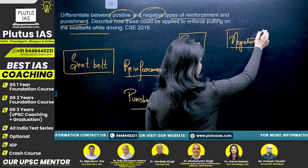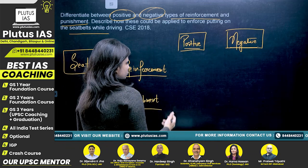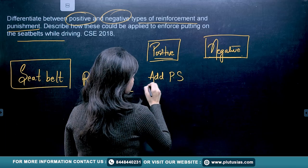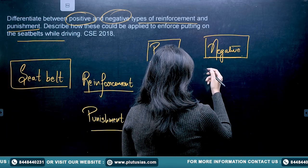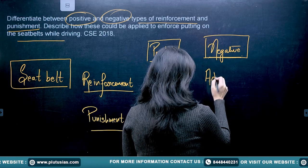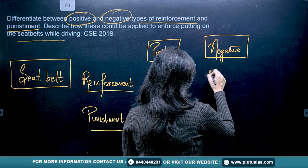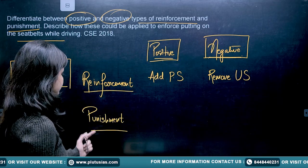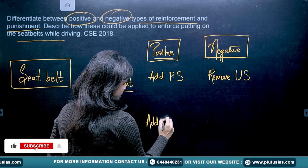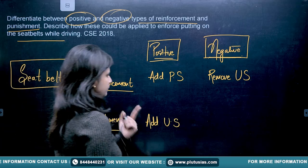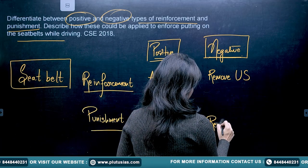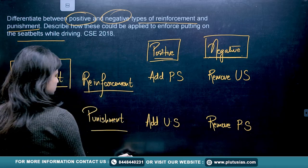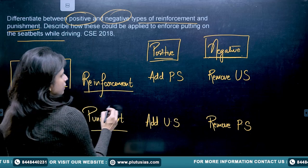First, we need to understand what positive reinforcement and negative reinforcement are. Positive reinforcement is where you add a pleasant stimulus. Negative reinforcement is where you remove an unpleasant stimulus. Positive punishment is where you add an unpleasant stimulus. Negative punishment is where you remove a pleasant stimulus.